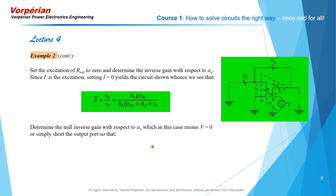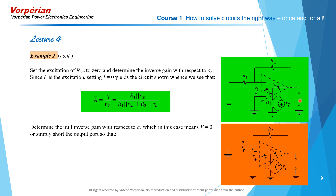The second calculation is the null inverse gain with respect to A0 with the response nulled. The voltage across the current source being zero is tantamount to shorting that current source. So when we determine V_epsilon over Vt with the response of R_out set equal to zero, we effectively short that port. With the short circuit present, Vt cannot generate a voltage V_epsilon, so the null inverse gain V_epsilon over Vt is zero.